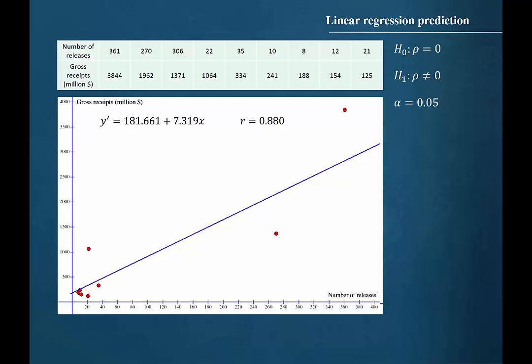We will use a level of significance alpha equals 0.05 for this hypothesis test. The procedure for finding the p-value can be found in previous videos in this chapter. The p-value for the significance of the correlation coefficient for this set of data is 0.0017.